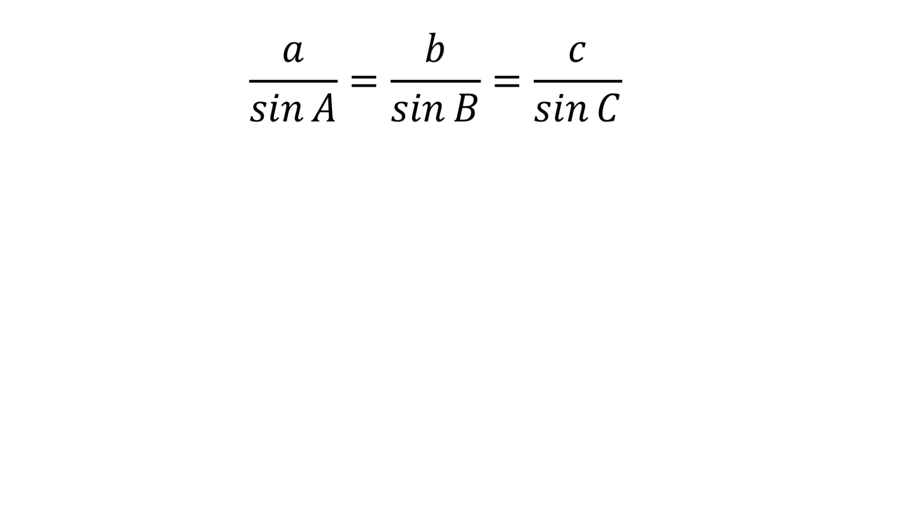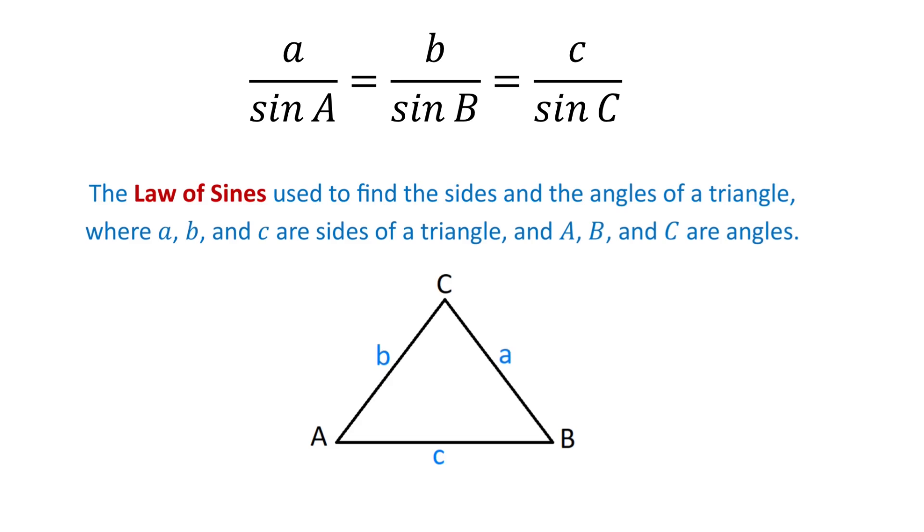The next formula is a over sin of a equals b over sin of b equals c over sin of c. This is the law of sines that is used to find the sides and the angles of a triangle where the lowercase a, b and c are the sides and the uppercase a, b and c are the angles.